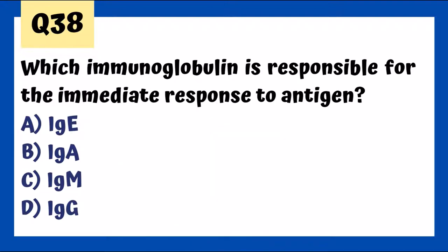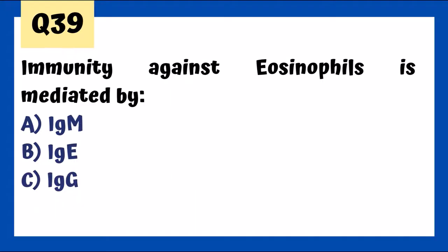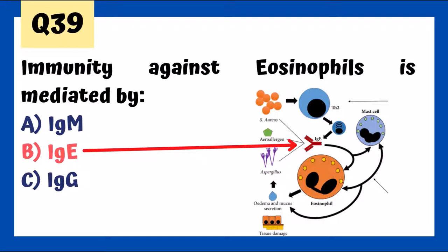IgM is responsible for the immediate response to antigen, while IgG is associated with the later chronic response. Immunity against parasites is mediated by IgE, which activates eosinophils and mast cells.